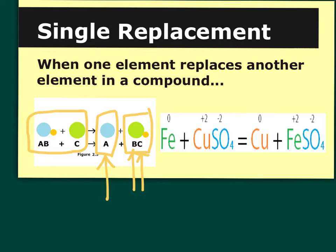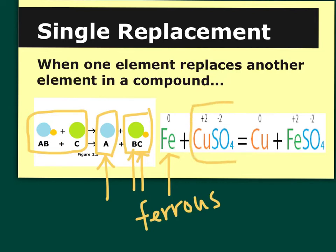An example is this reaction on the right. We have iron — chemical symbol Fe, from 'ferrous,' which means iron — and copper sulfate. When iron and copper sulfate react, the products are copper and ferrous sulfate. The copper, which was bound with the sulfate (SO₄), has separated from it, and the sulfate is now bound with the iron to form ferrous sulfate. So only one element is being replaced: copper is replaced by iron.